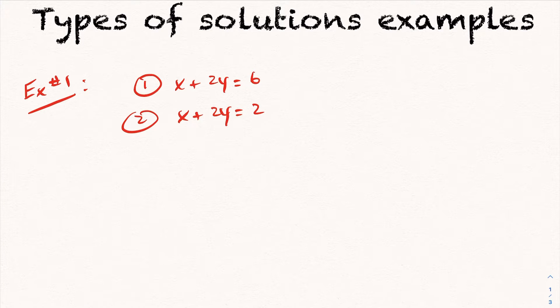All right, so I want to go through some examples of these types of solutions you can have. Like given a system of linear equations, what type of solution do you have without actually having to solve for it?